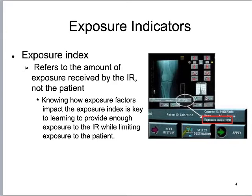Unfortunately, these are confusing as hell. Ideally, what an exposure index refers to is the amount of exposure received by the image receptor — not by the patient. It's not a dose, but it tells us how much exposure traveled through the patient, and the remnant beam struck the image receptor. Knowing this gives me a ton of information: was this technique appropriate? Is this a technique I could use on someone else? Was there an opportunity to reduce dose? This is just an example of where that exposure indicator is buried on an older Fuji system.